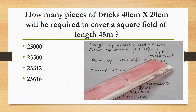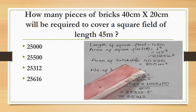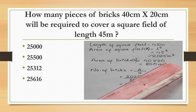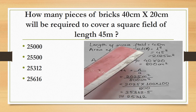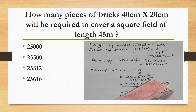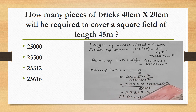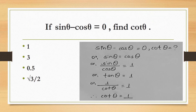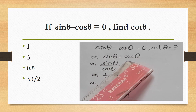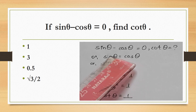Area of the square field = l² = 45² = 2025 m². Area of one brick = 40 × 20 = 800 cm². Number of bricks = area of square field / area of one brick = 2025 m² / 800 cm². Converting m² to cm² (multiply by 10,000), we get 25,312.5 bricks.